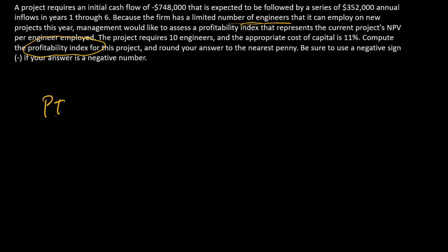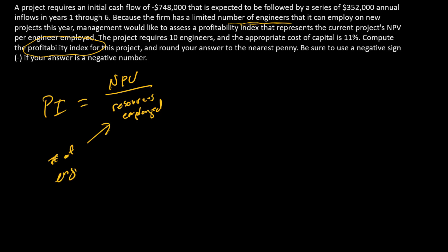The profitability index is computed as the project's NPV divided by the measure of resources employed in the project. Here, resources is going to be number of engineers.